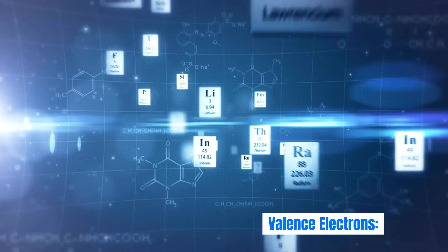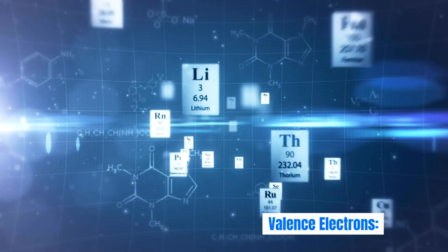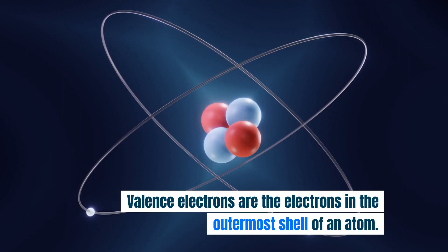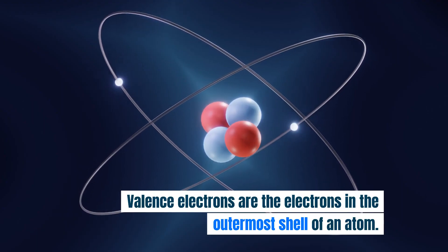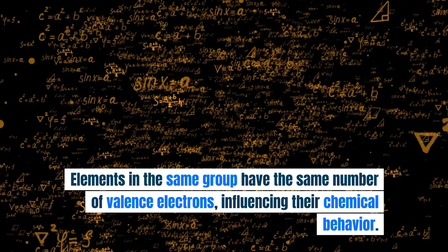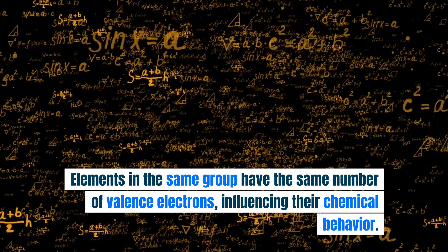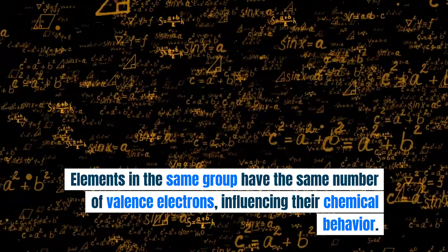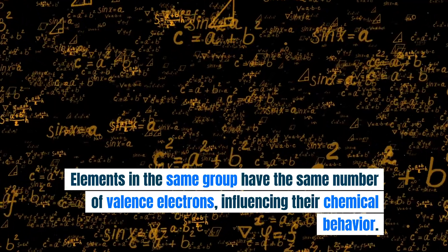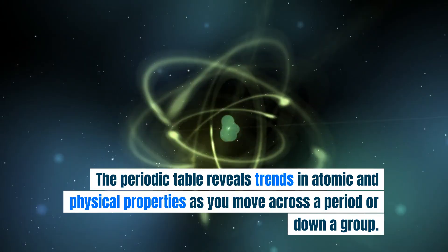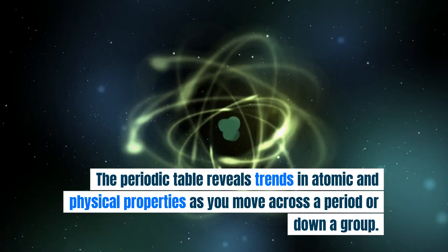Valence electrons are the electrons in the outermost shell of an atom. Elements in the same group have the same number of valence electrons, influencing their chemical behavior. Periodic trends: the periodic table reveals trends in atomic and physical properties as you move across a period or down a group.